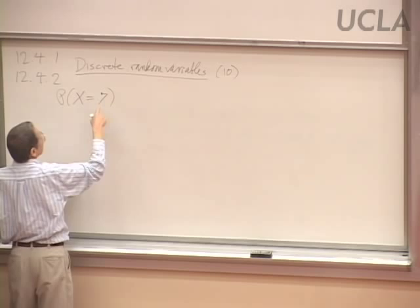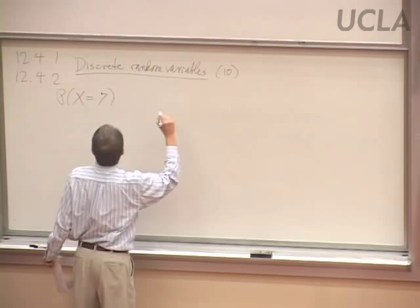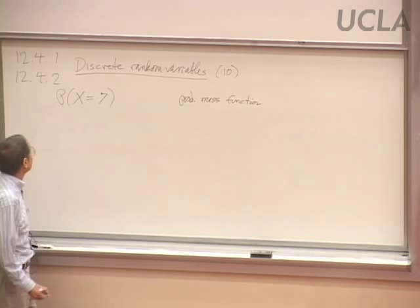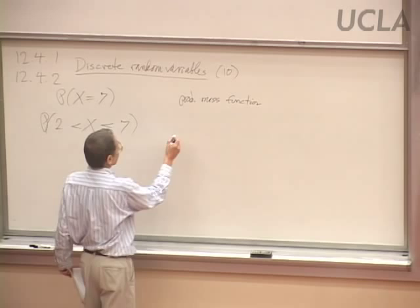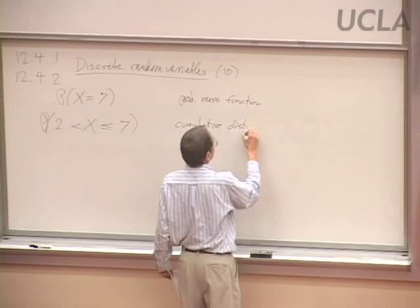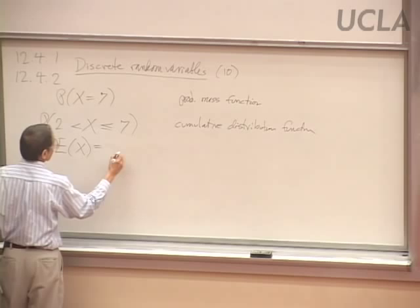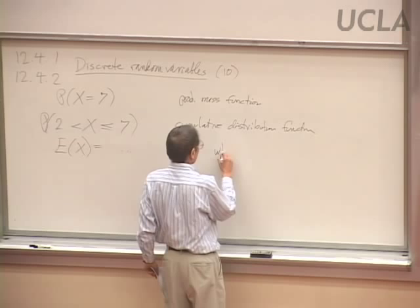Sometimes we were looking at the probabilities that a random variable equals something — that would be the probability mass function. Sometimes we want the probability that the random variable is in some range, perhaps from 2 to 7, and we want the cumulative distribution function. You want to know both what these are and when to use them.